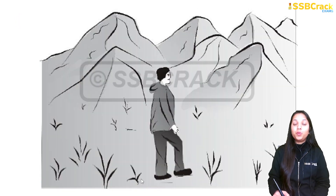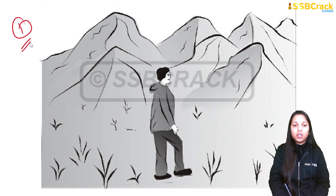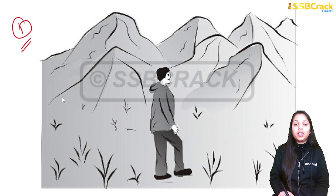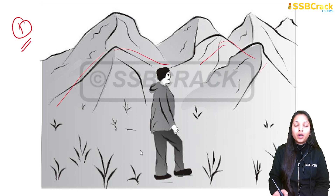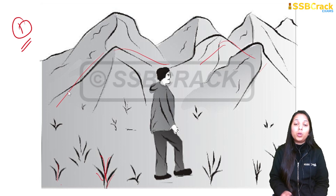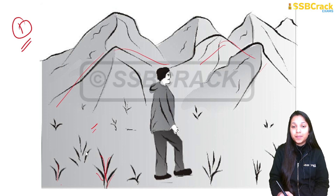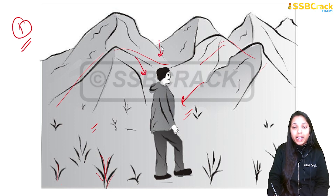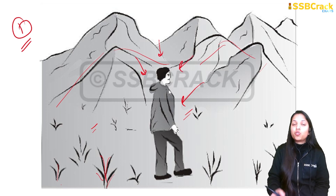Now we will move on to the practice set. For the first picture, you will get 30 seconds — you can pause the video, observe it, and write your own story. Here we can see mountains and some plants grown on them, so these are not snow-capped mountains — don't assume it is winter with snow. One male character is shown. You can make a lot of themes: he could be an organizer, a guide, or someone going on a trip with friends.